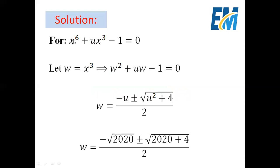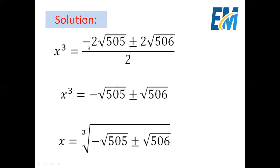Now for the second equation: x to the power 6 plus u x cubed minus 1 equals 0. We use the substitution w equals x cubed, so x to the power 6 becomes w squared. The equation becomes w squared plus u w minus 1 equals 0. Applying the quadratic formula, w equals (minus u plus or minus the square root of u squared plus 4) over 2. Since u squared equals 2020, this gives w equals (minus u plus or minus square root of 2024) over 2, which simplifies to minus radical 505 plus or minus radical 506.